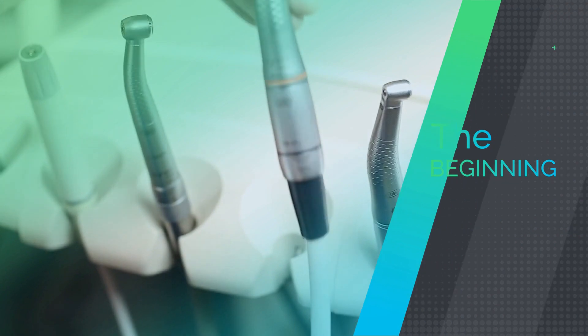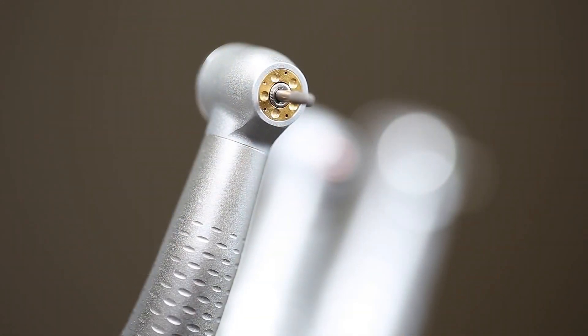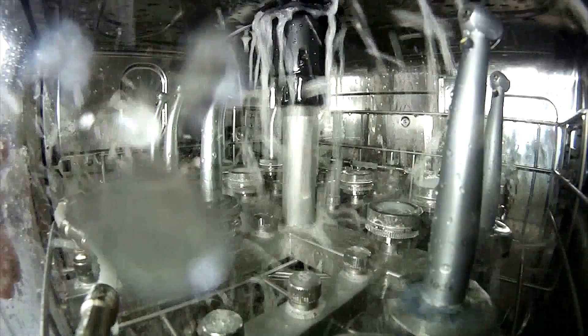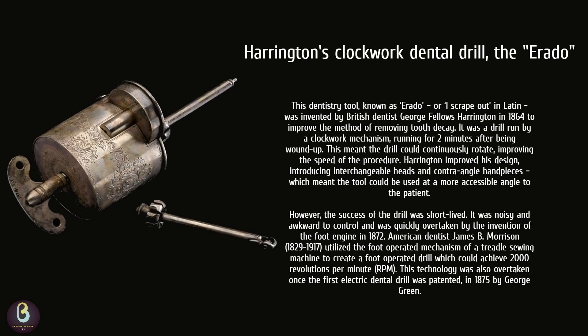Let's look into where it all began. The first clockwork drill, erato, was invented by British dentist George Fellows Harrington in 1864. After winding, it ran for two minutes. This was the first time continuous rotation was possible for a drill.